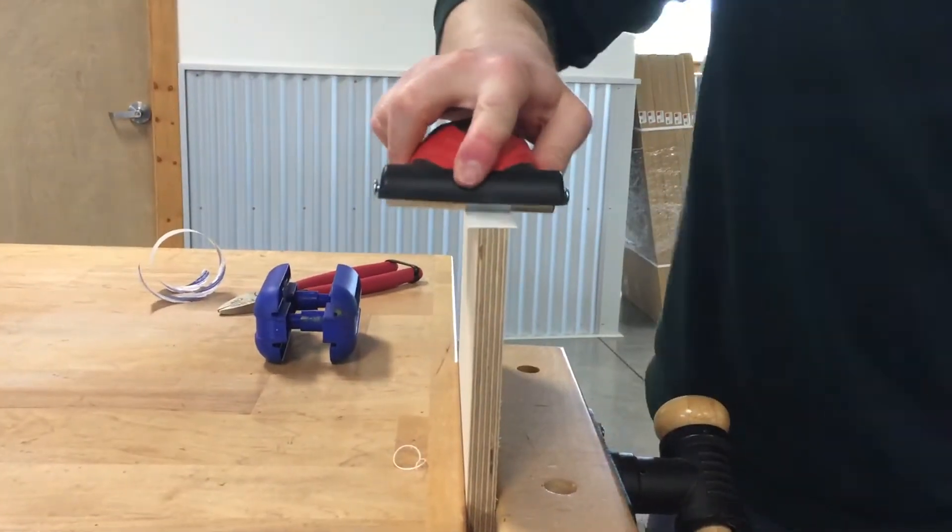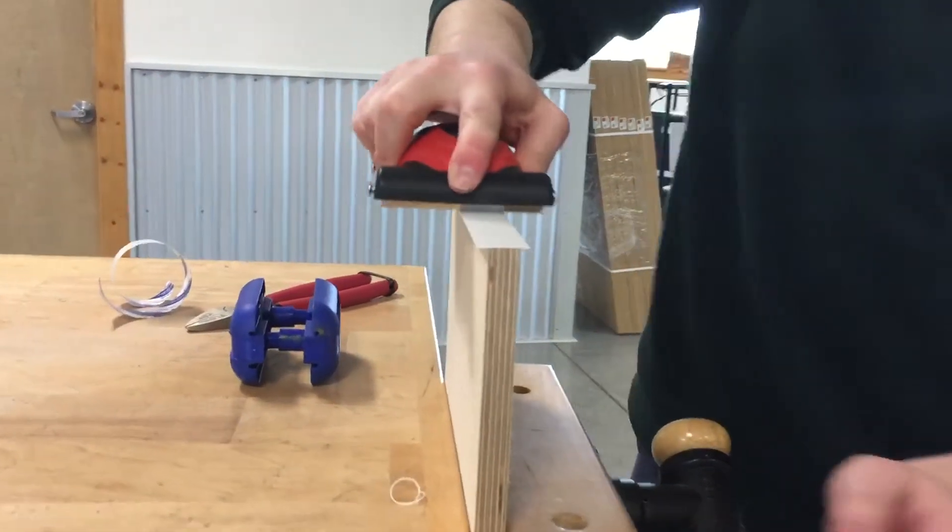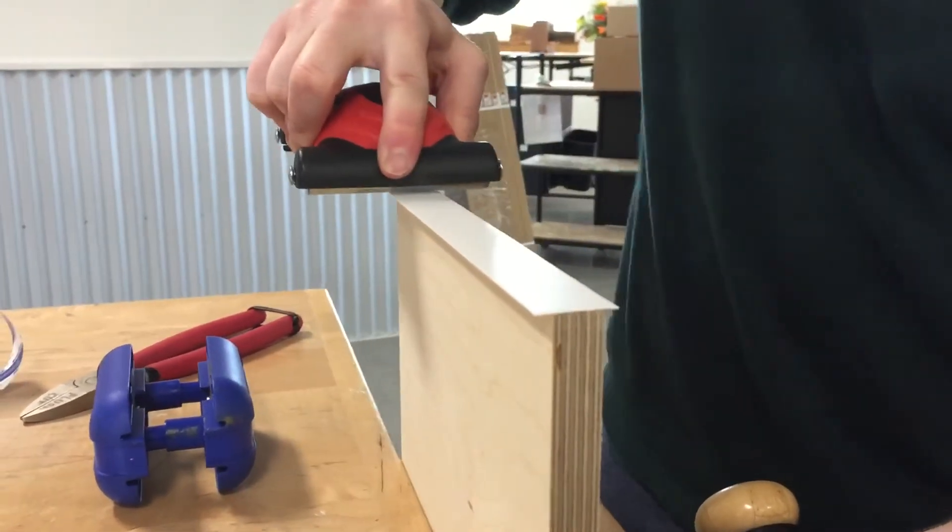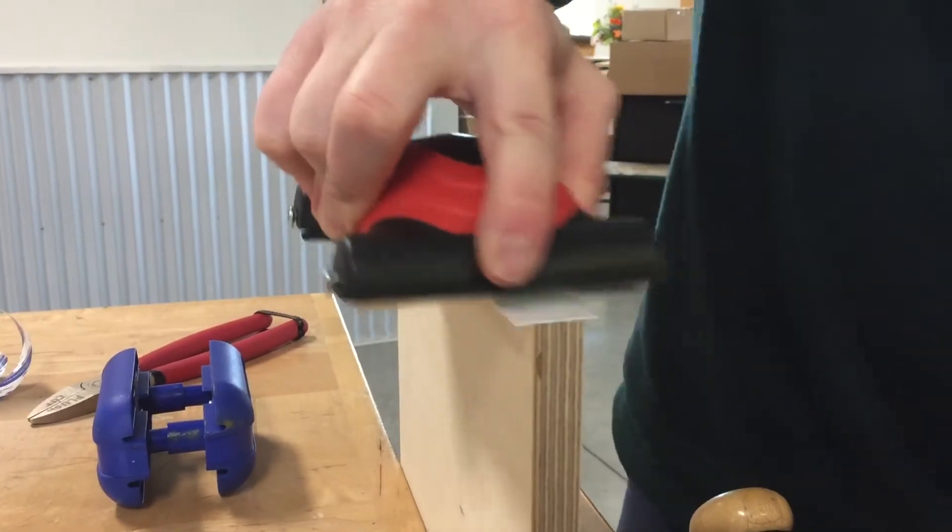Then you want to take your roller again and really put a lot of pressure on, but you don't want to bend it over and break the edge while you're rolling it. You want to keep the roller perfectly level. Get all the way to the ends.